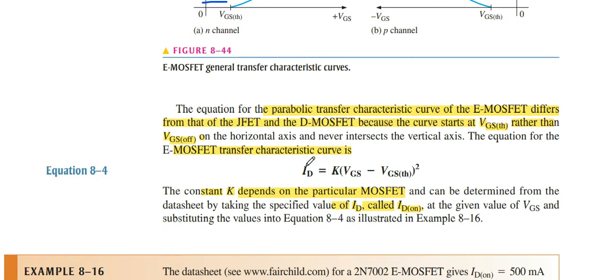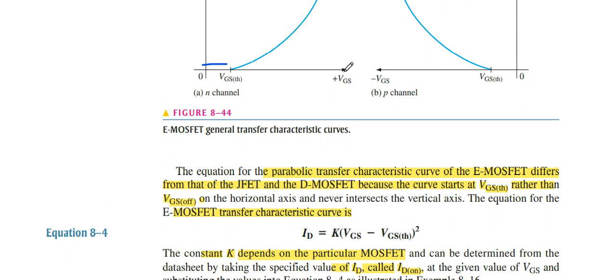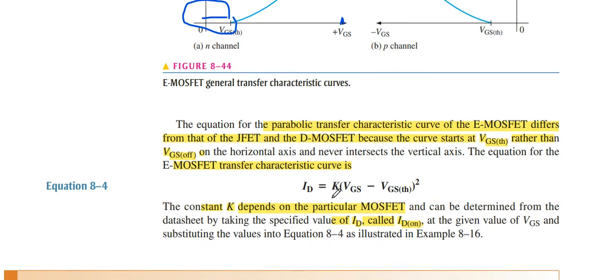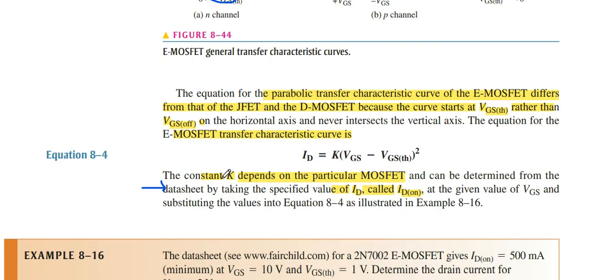But ID increases with the increase of VGS after threshold voltage. This is the ID value where K is the constant dependent upon the particular MOSFETs, and VGS minus VGS threshold, whole squared. It represents us that VGS total must be less than this voltage from zero to VGS threshold. Then we get the result, and it's squared multiplied by K.